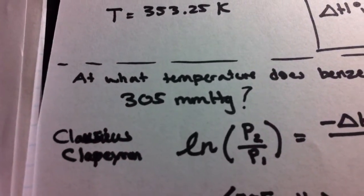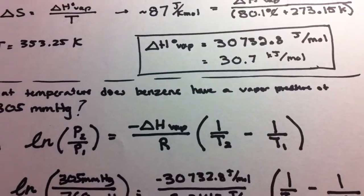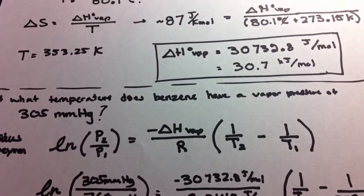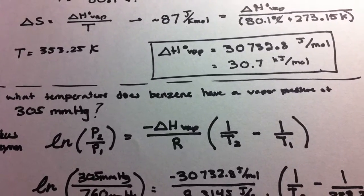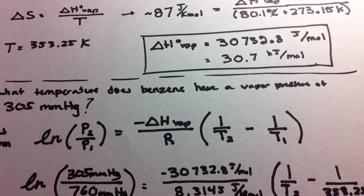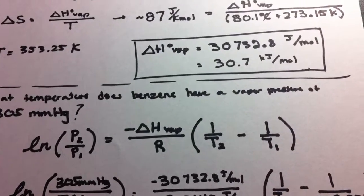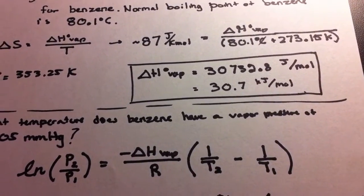We're going to use the Clausius-Clapeyron equation. Of course, this is a variation of that, so there are going to be a lot of different ways to solve this, but here's one way. We have this equation. We have two Ps for pressure. We have delta H, which we calculated here. We have R, which is the natural gas constant, and we have temperatures.